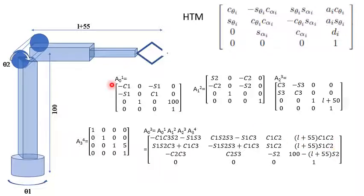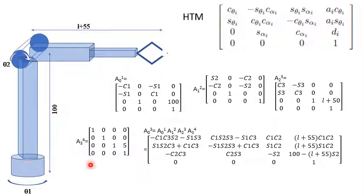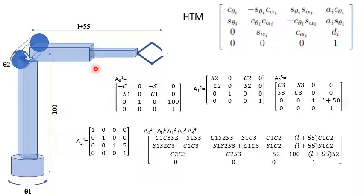In the resulting transformation matrix, the x coordinate is l plus 55 — if you rotate it downward, it becomes the cosine component of l plus 55, and rotating in the theta one direction gives another cosine component. So x equals (l + 55) times cos(theta2) times cos(theta1). Similarly, y equals (l + 55) times cos(theta2) times sin(theta1).